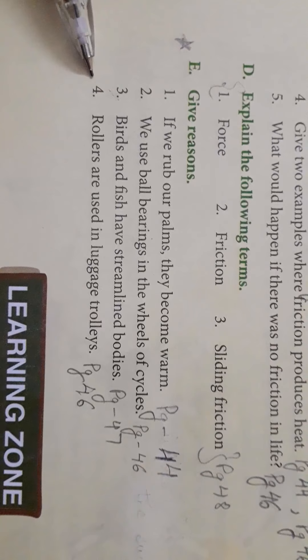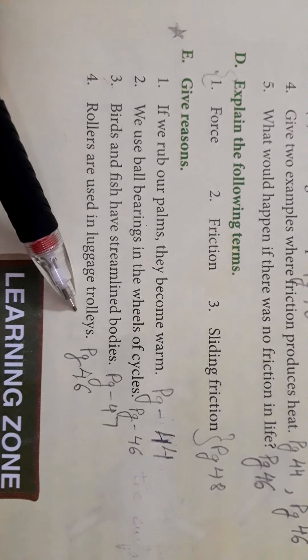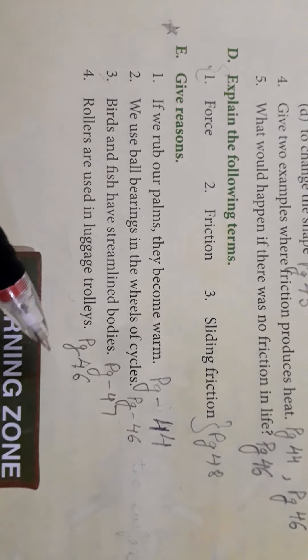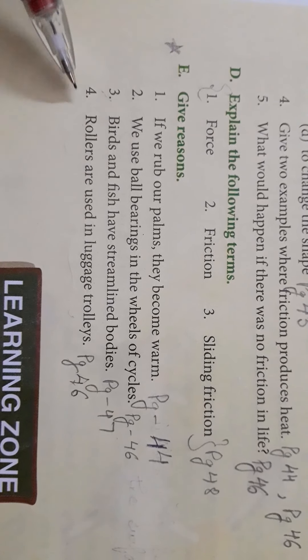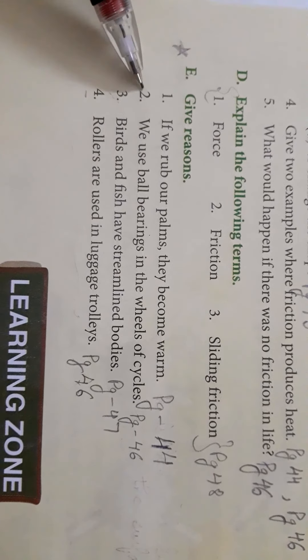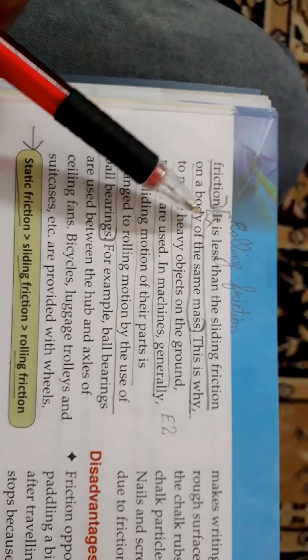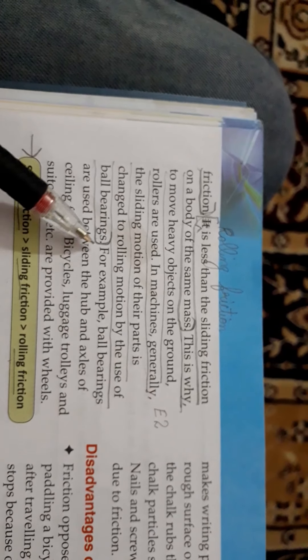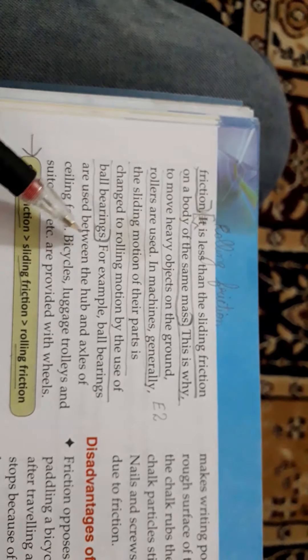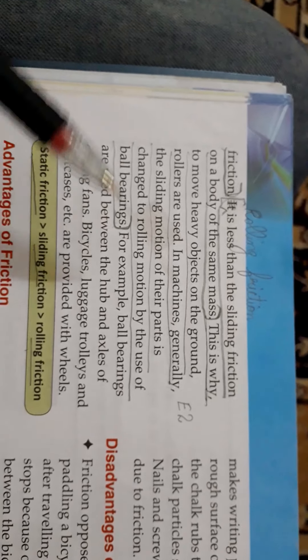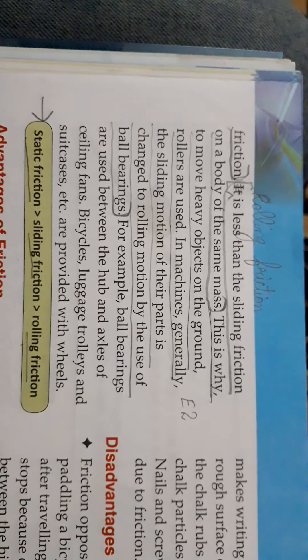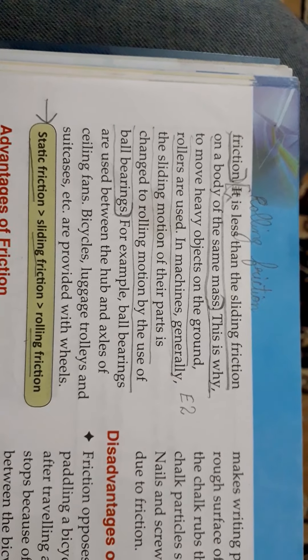The fourth one: rollers are used in luggage trolleys. The same answer as the second question, which is on page 46. Rolling friction starts with dirt and ends with ball bearings. The same answer will be for the fourth give reason answer.